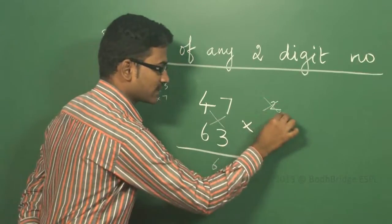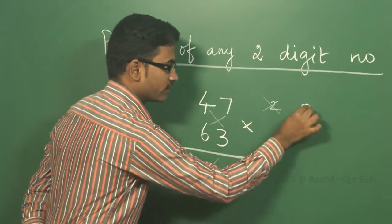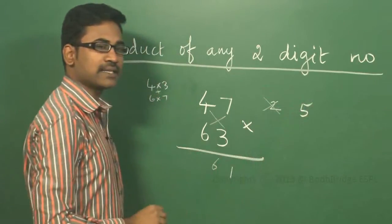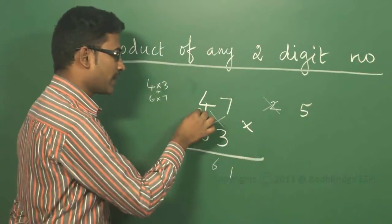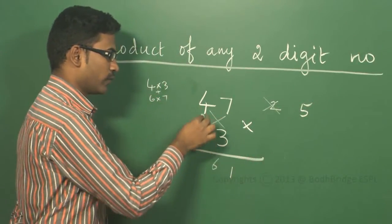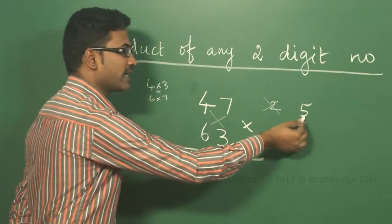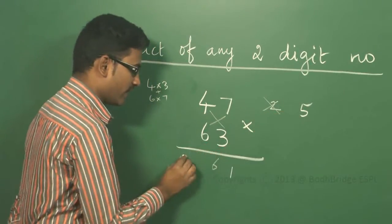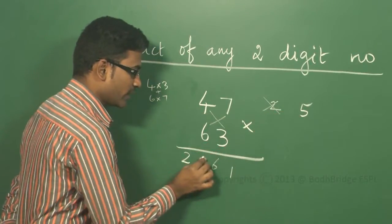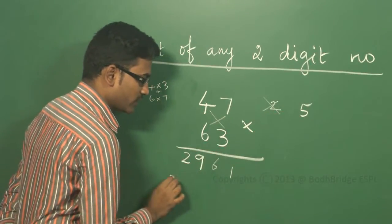Now carry is 5. The last step is to multiply the tens column: 4 into 6 is 24. The carry 5 is already there, so 24 plus 5 equals 29.